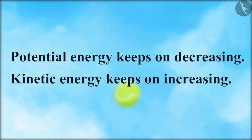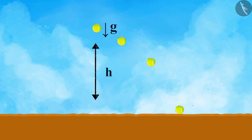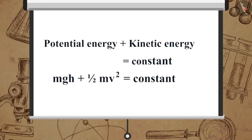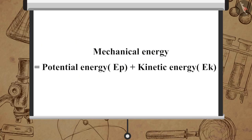When the ball continues to fall, the potential energy keeps on decreasing and the kinetic energy keeps on increasing. The sum of potential energy and kinetic energy of an object always remains constant at all points: potential energy plus kinetic energy equals a constant, i.e., MgH + ½mv² = constant. The potential energy and kinetic energy of an object together form the mechanical energy of an object.